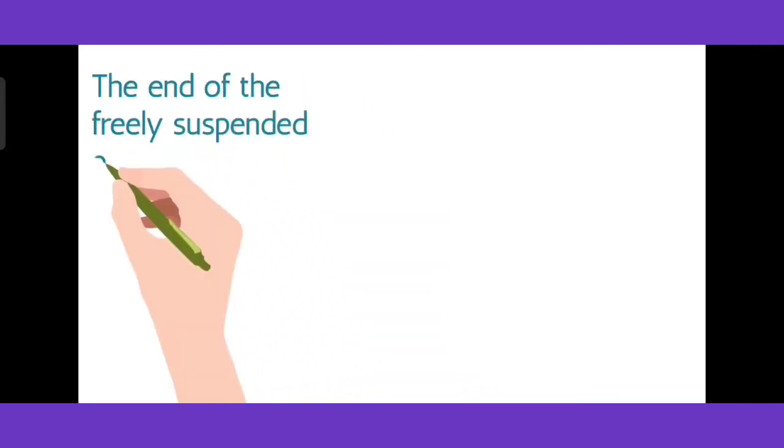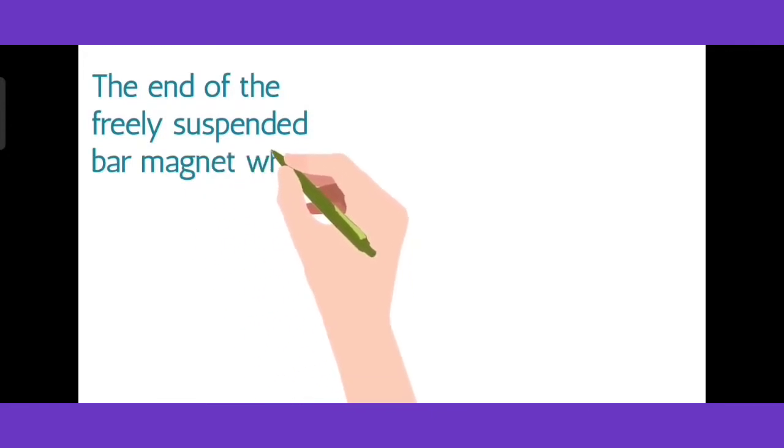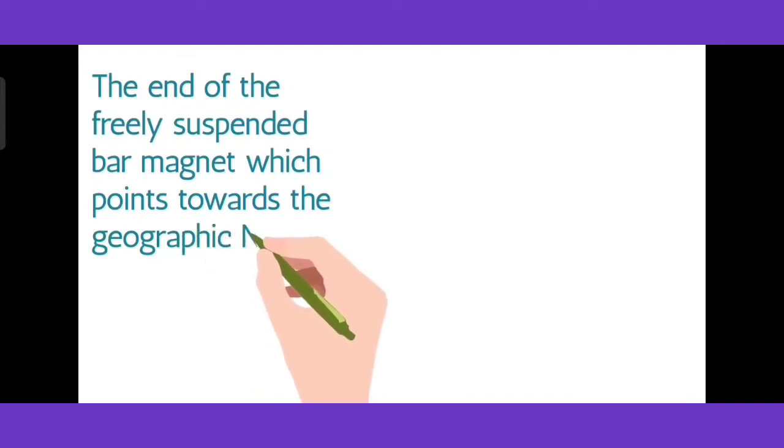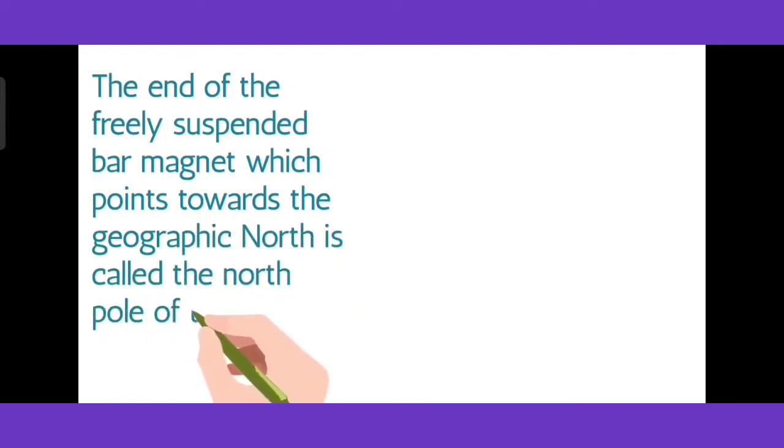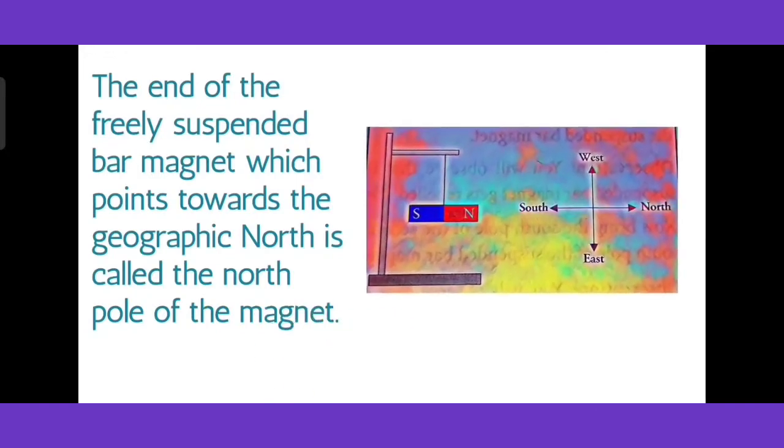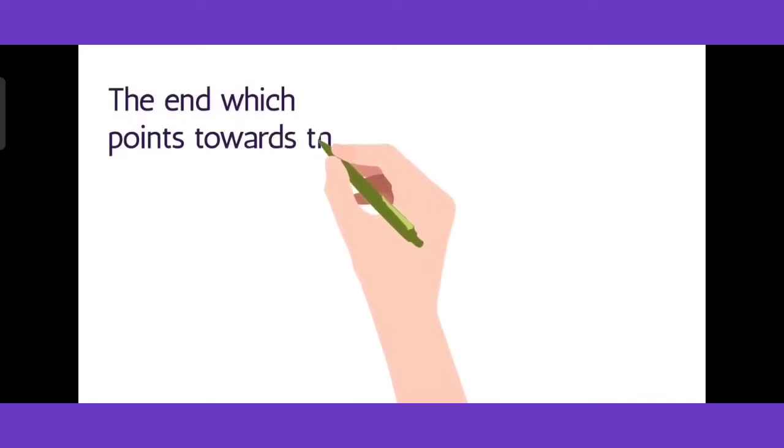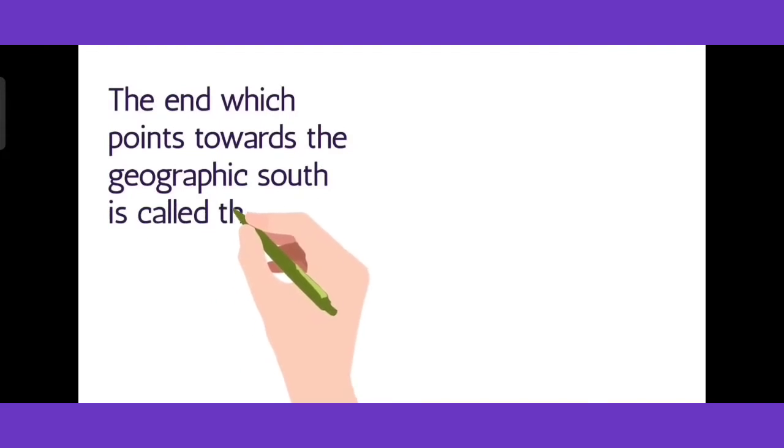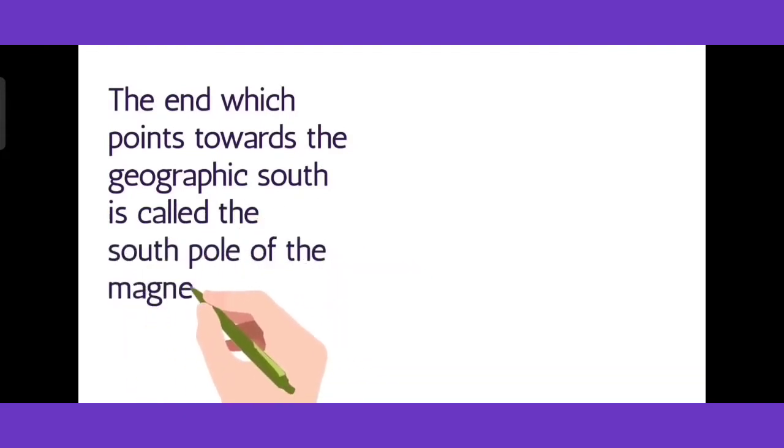The end of the freely suspended bar magnet which points towards the geographic north is called the north pole of the magnet. The end which points towards the geographic south is called the south pole of the magnet.